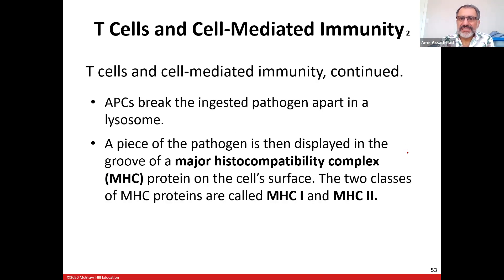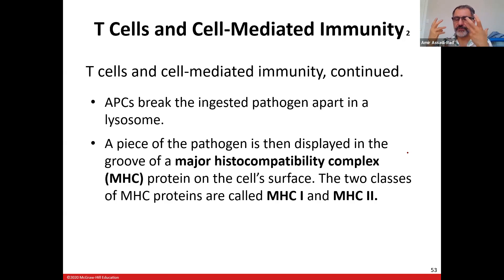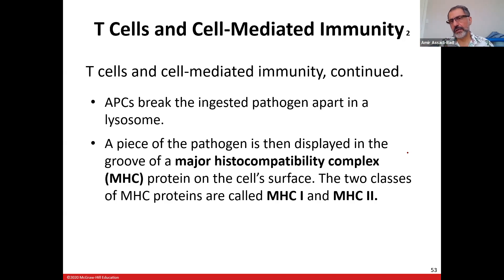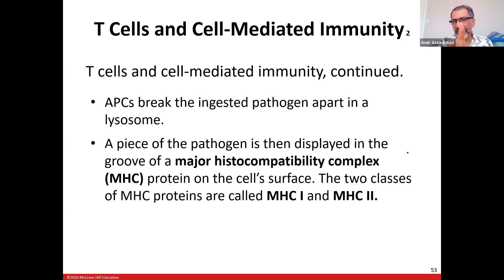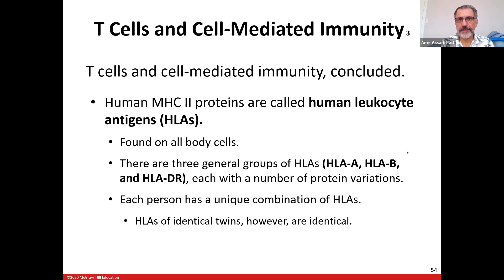Cytokines go to T cells, T cells differentiate and activate B cells, and B cells make the antibodies. Major histocompatibility complex (MHC): the surface protein molecules on my cells differ from yours. When they take my body parts and put them in your body, your immune system rejects them as foreign material — as happens in organ transplants. Immunosuppressive drugs are given to fight this MHC rejection.